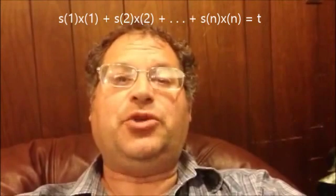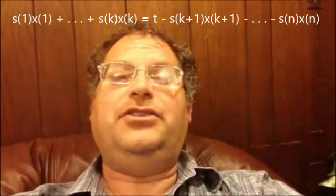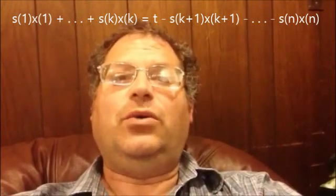We can subtract n minus k terms from the original equation on both sides, where k is between 0 and n, to get the following equation on your screen. Then we have 2 to the k possible expressions on the left-hand side of the equation and 2 to the n minus k possible expressions on the right-hand side of the equation.